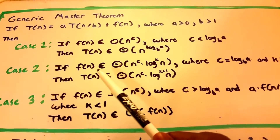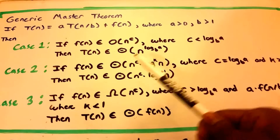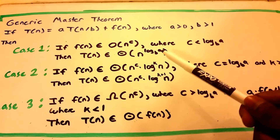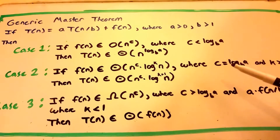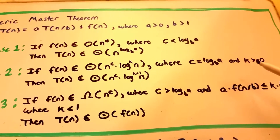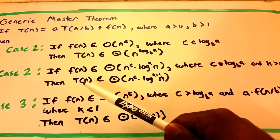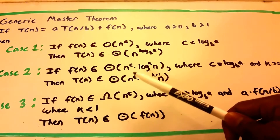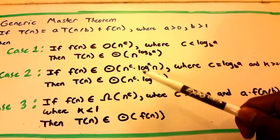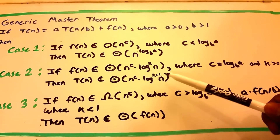Case 2: if the function of n belongs to theta of n to the power of C times log to the power of K of n, where C is equal to log base B of A and K is greater than or equal to 0, then T belongs to big theta of n to the power of C times log to the power of K plus 1 of n.